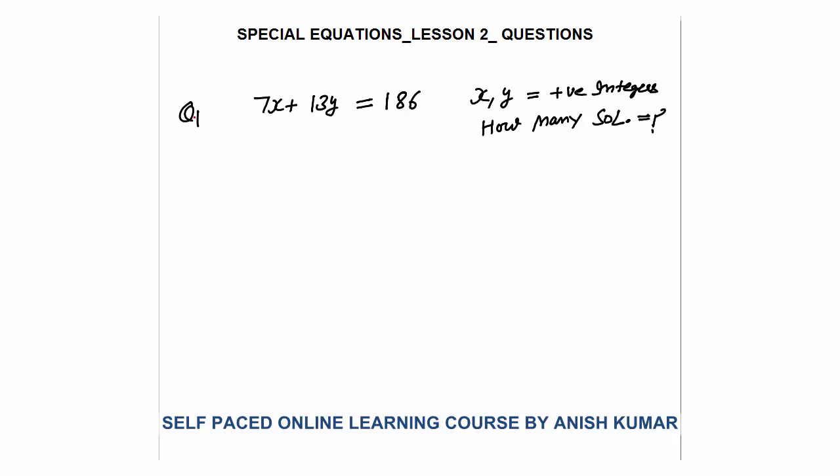Hello, this is special equation lesson 2. In this I will discuss questions based on the concept I discussed in the previous lesson. Now 7x plus 13y is given to you as 186. X and y are positive integers. The question says how many solutions are possible.